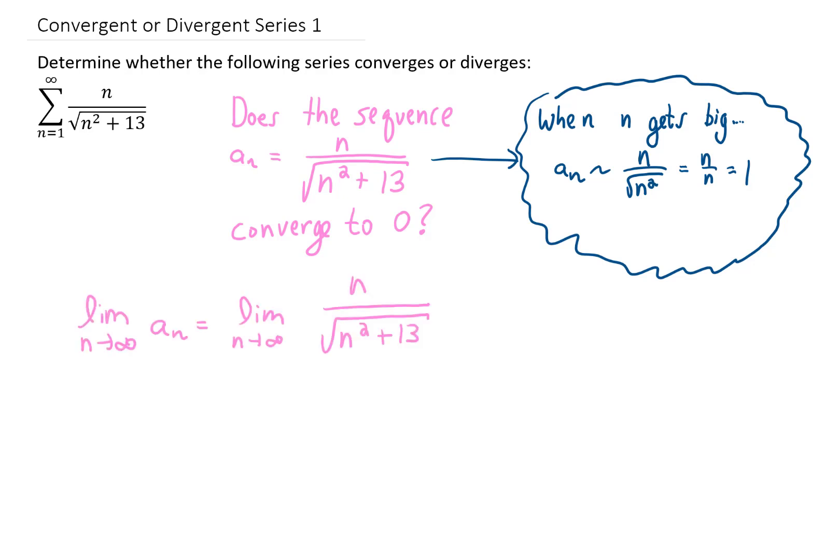We can look at the limit as n goes to infinity of our sequence. One way to calculate this limit would be to divide both the numerator and the denominator by the highest power of n. In order to take this one over n in the denominator and simplify this square root, we're going to have to rewrite that one over n as one over the square root of n squared. So there's a little bit of algebraic trickiness for you.